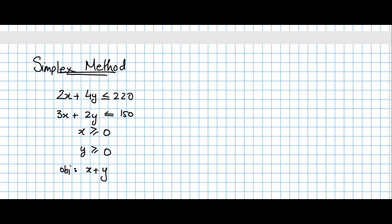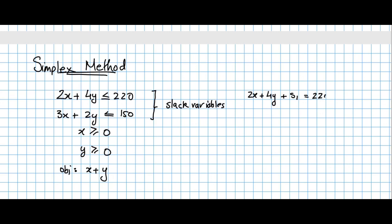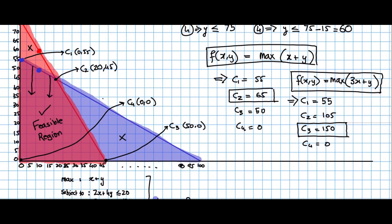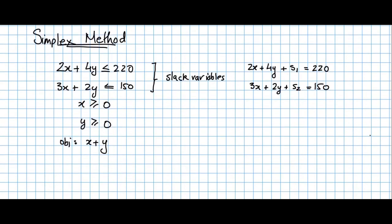The process works by converting all of the constraints and the objective function to a system of equations. The system of equations requires equality operators, so what we can do is introduce slack variables to the conditions such that we can write the expressions as 2x + 4y + s1 = 220. The slack variables give the distance between the left-hand and right-hand side of the equation such that it may be equivalent to 0.